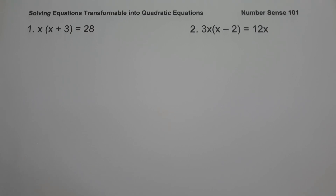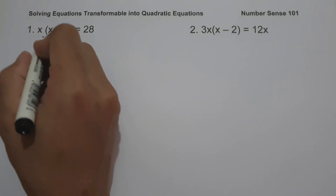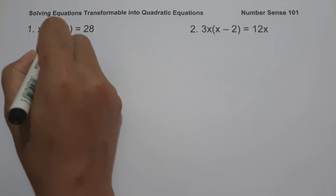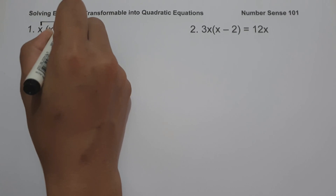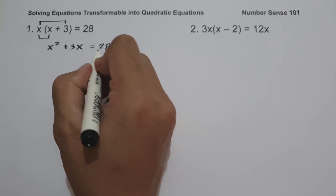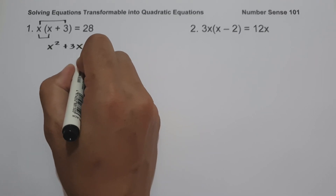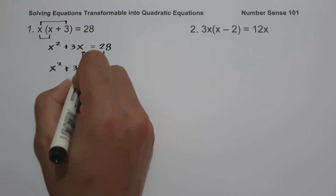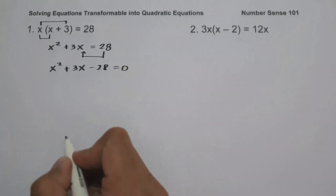On number one, we have x times the quantity x plus 3 equals 28. To find the value of x, the first thing we're going to do is multiply x by x plus 3. So x multiplied by x is x squared, and x multiplied by 3 is 3x, equals 28. Let us move 28 to the other side, giving us x squared plus 3x minus 28 equals 0.